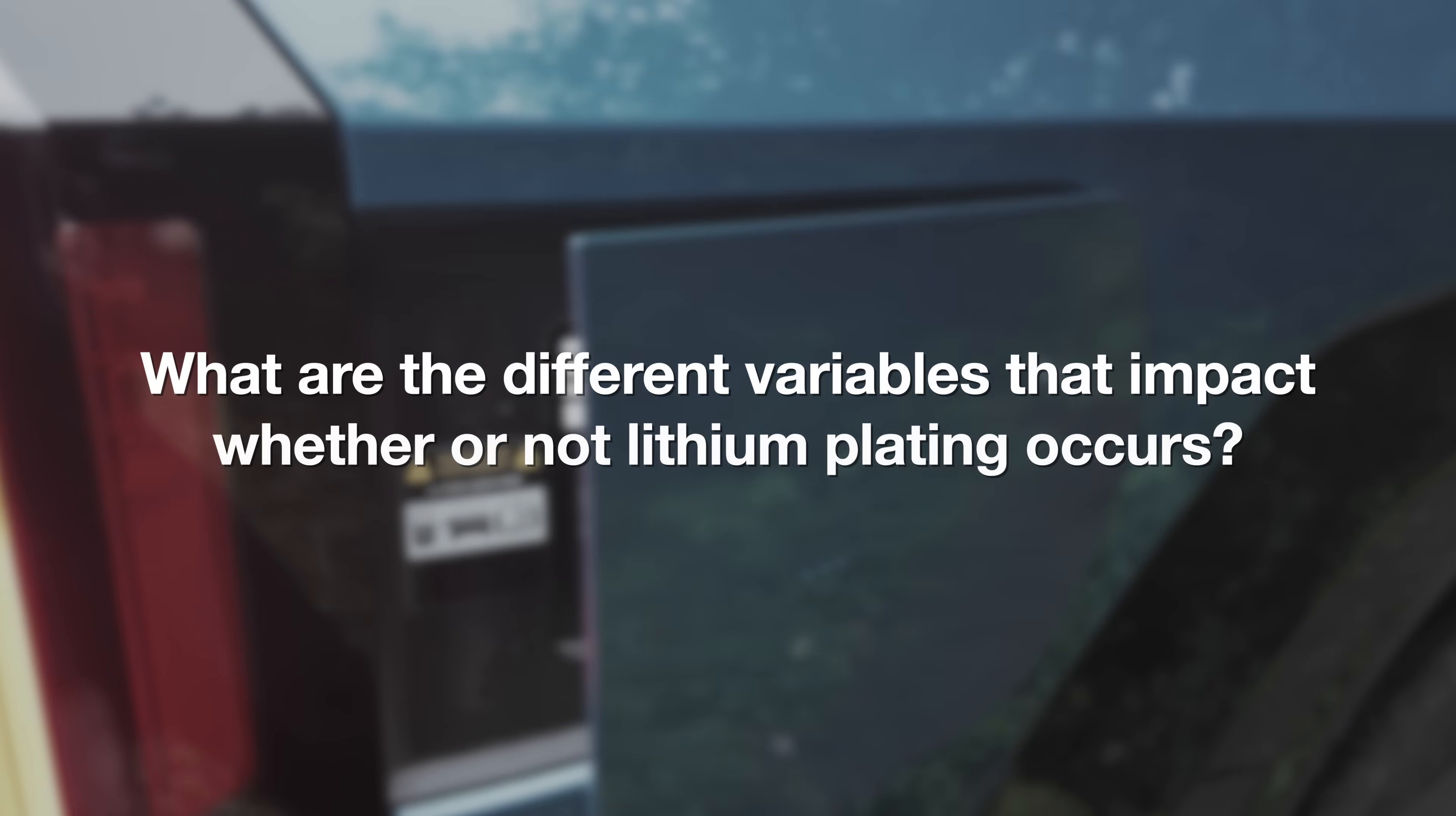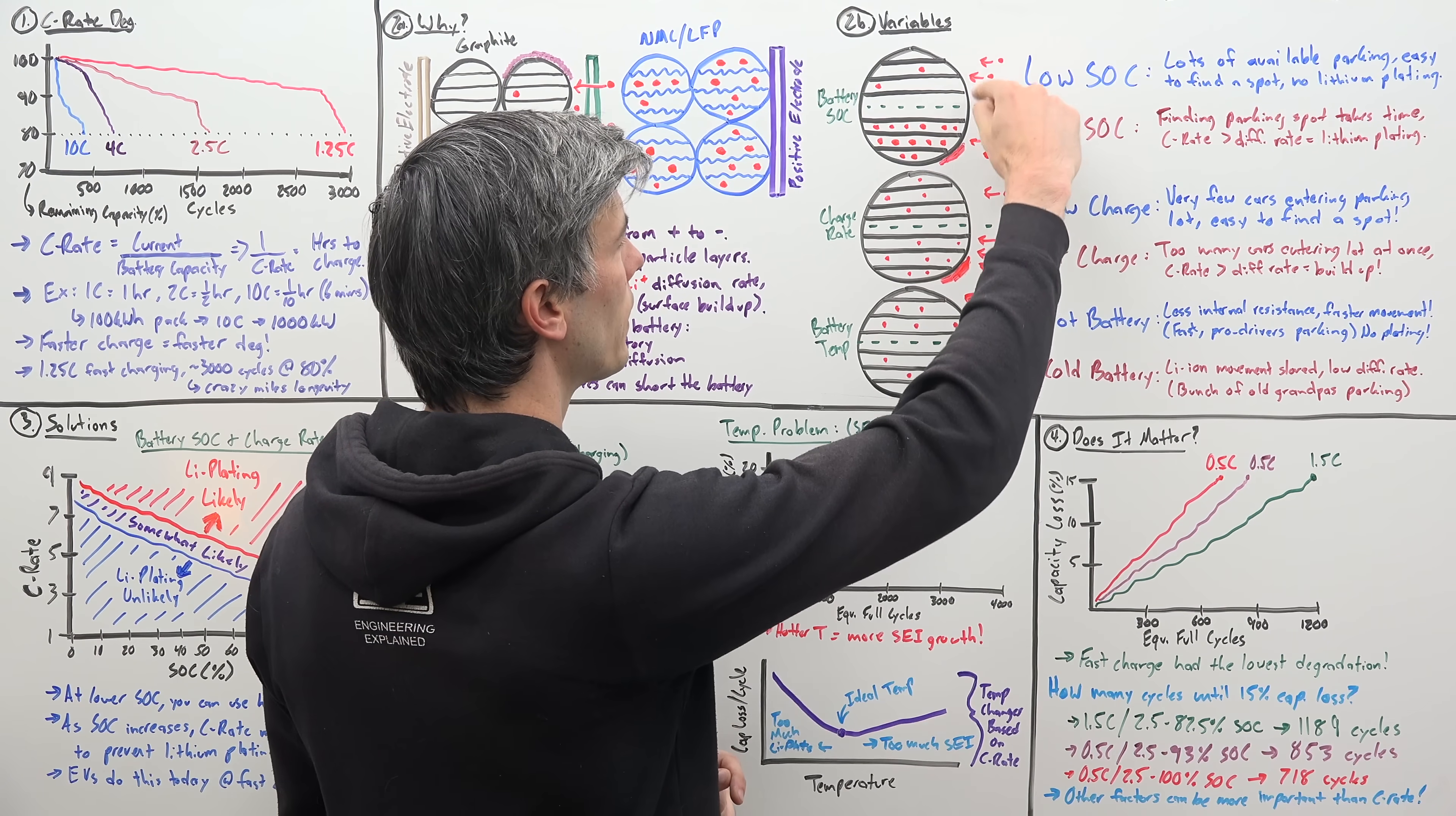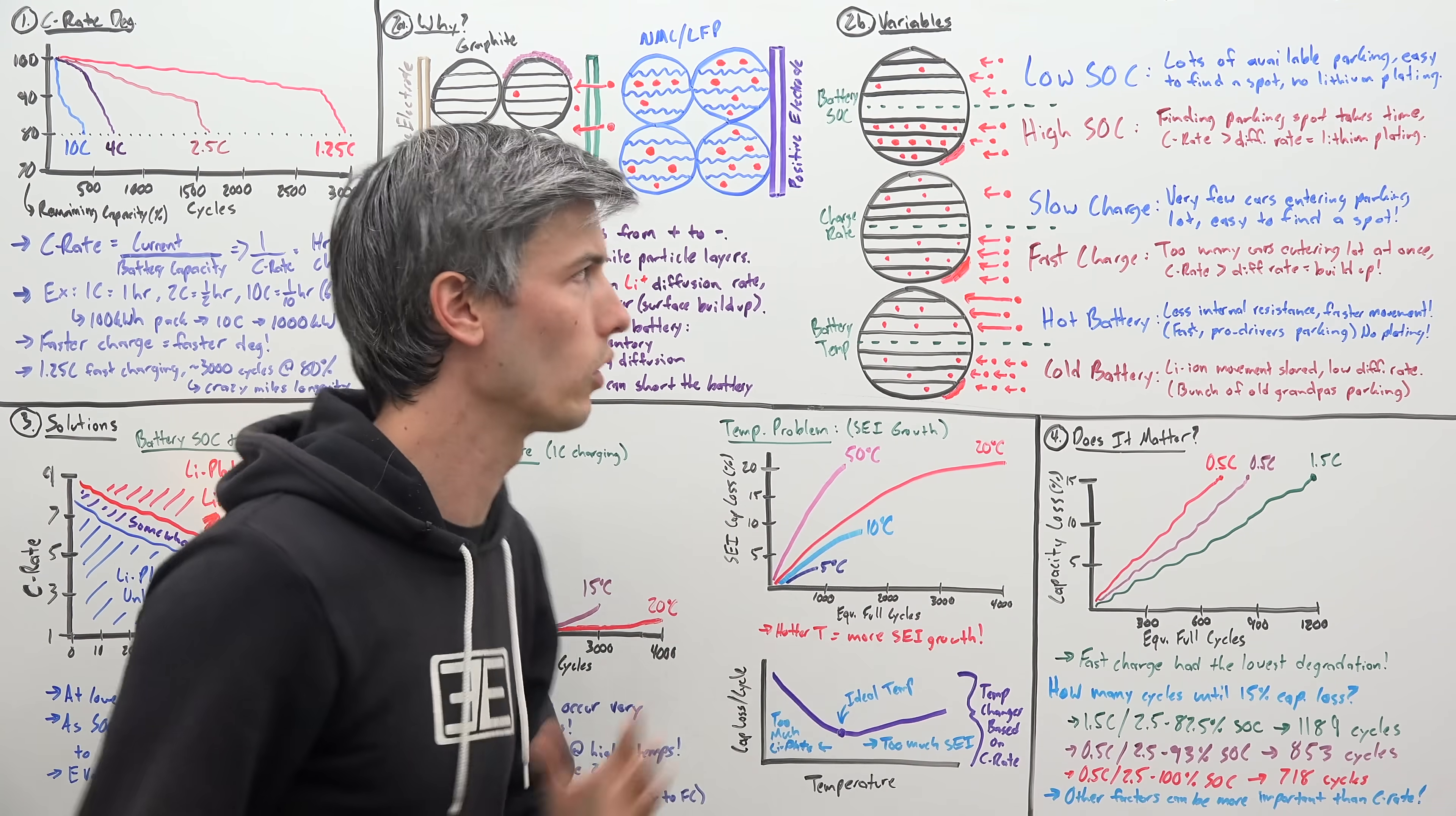So what are the different variables that impact whether or not lithium plating occurs? So the three variables we're going to look at, battery state of charge, charge rate, and battery temperature. And keep in mind our goal here, we want to make sure our diffusion rate of these lithium ions into these graphite particles is faster than our charging rate. In other words, we want to make sure there's plenty of time for all of these guys to find a parking space, rather than just throwing a ton of cars at that parking lot all at once.